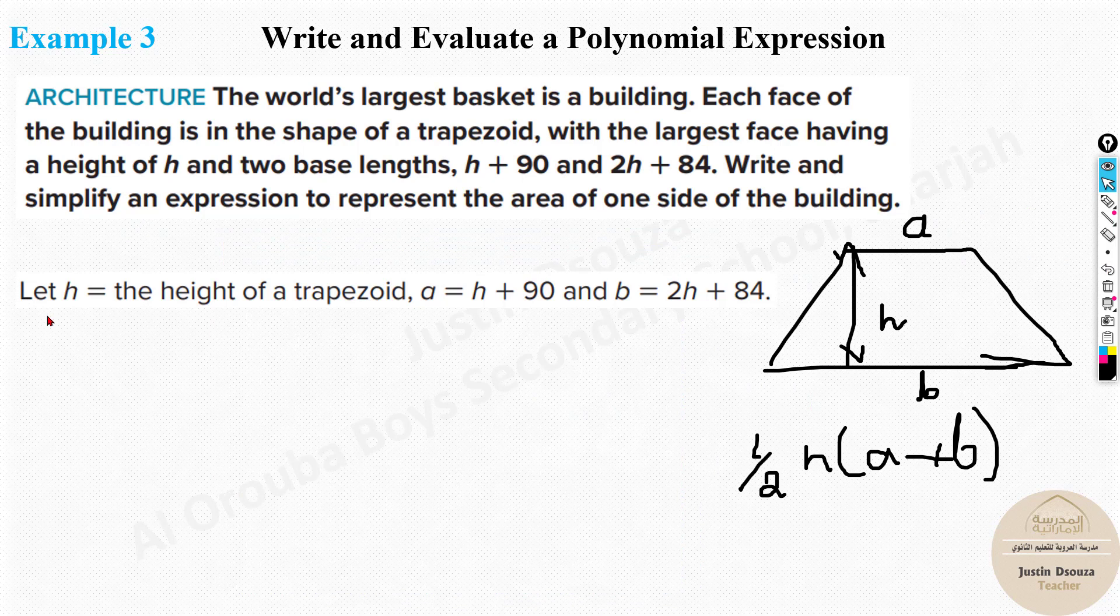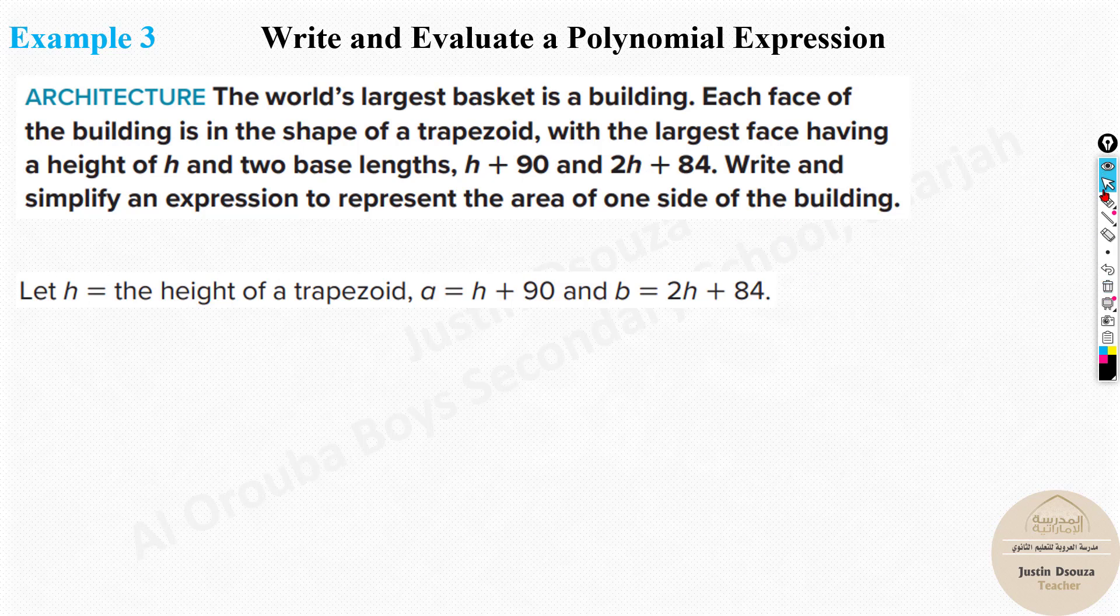Generally in a trapezoid, I hope you remember this, we have done this before. A trapezoid will have A, B and the height H is like this. The formula for the area is half H into A plus B. This is the formula for the area, surface area. So now that is what we will solve. All we need to do is H is height. Height of the trapezoid. Here we have A, consider A as one of the lengths. A will be H plus 90, B will be 2H plus 84.